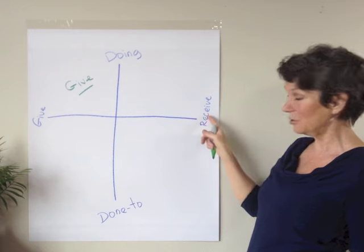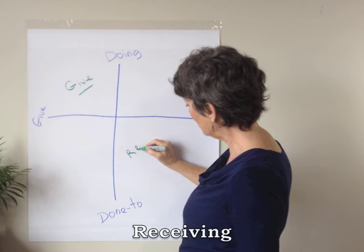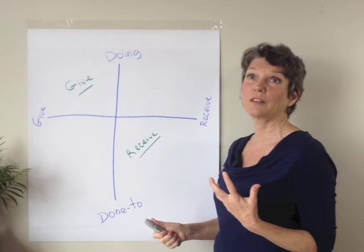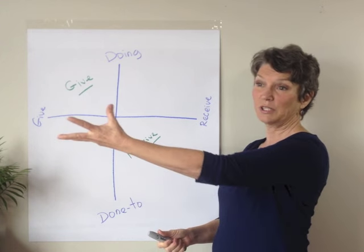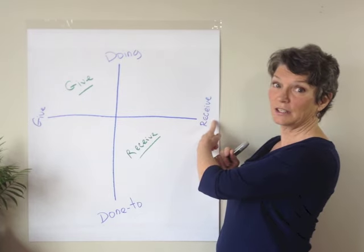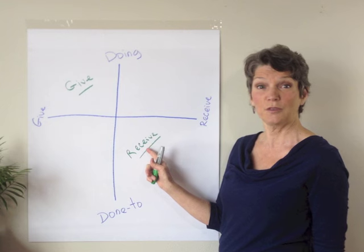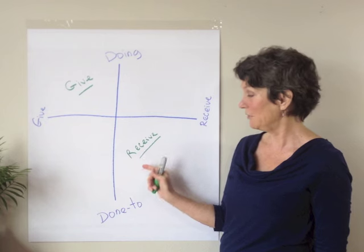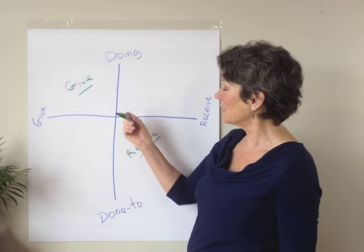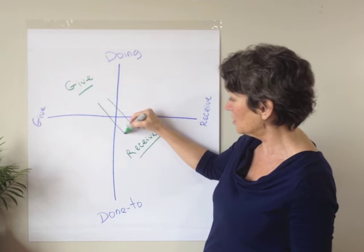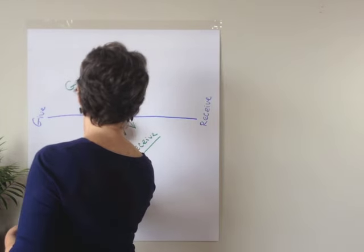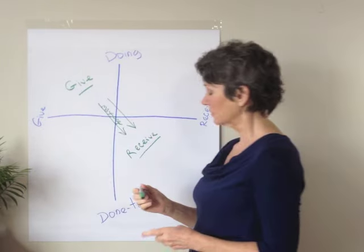Your partner is being done to and receiving the gift — so I call that receive. This is what most people call receive. Receiving can mean being on the receiving end of some action, or it can mean receiving a gift. In give and receive, the action goes one way and the gift also goes that way. The quintessential example of this is a massage.